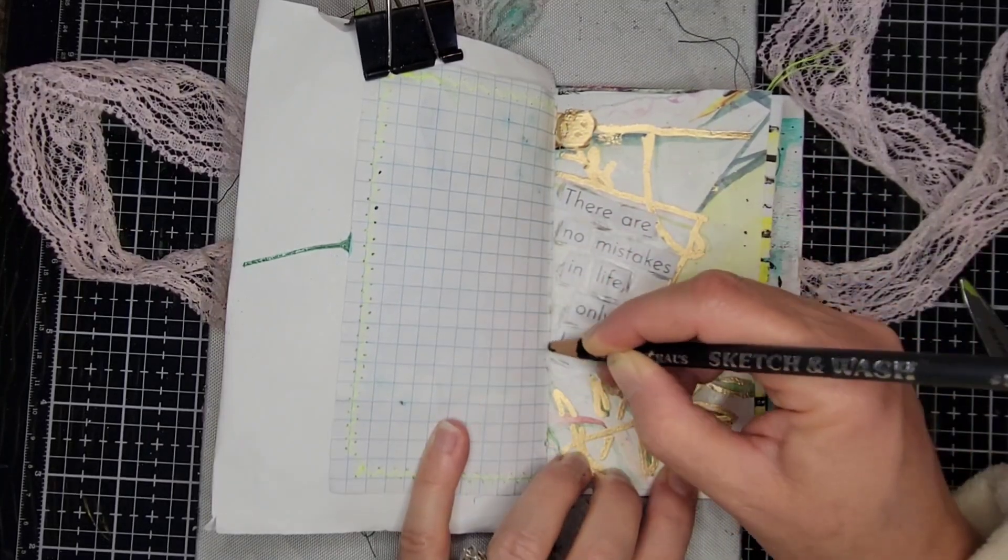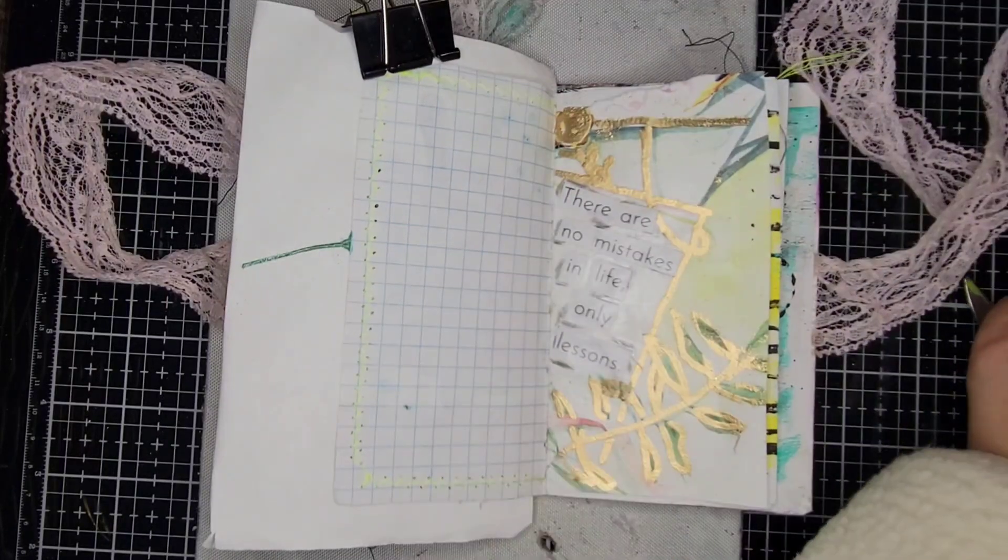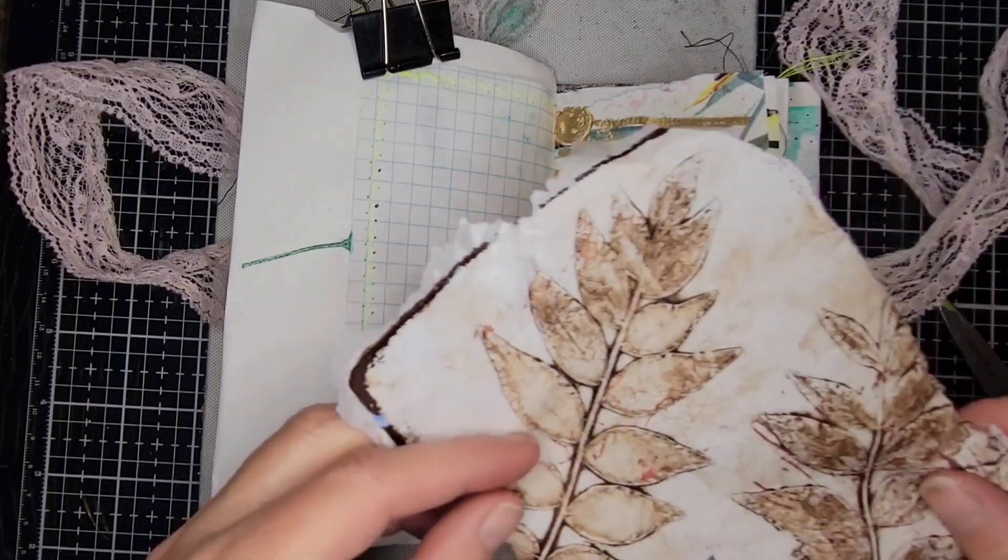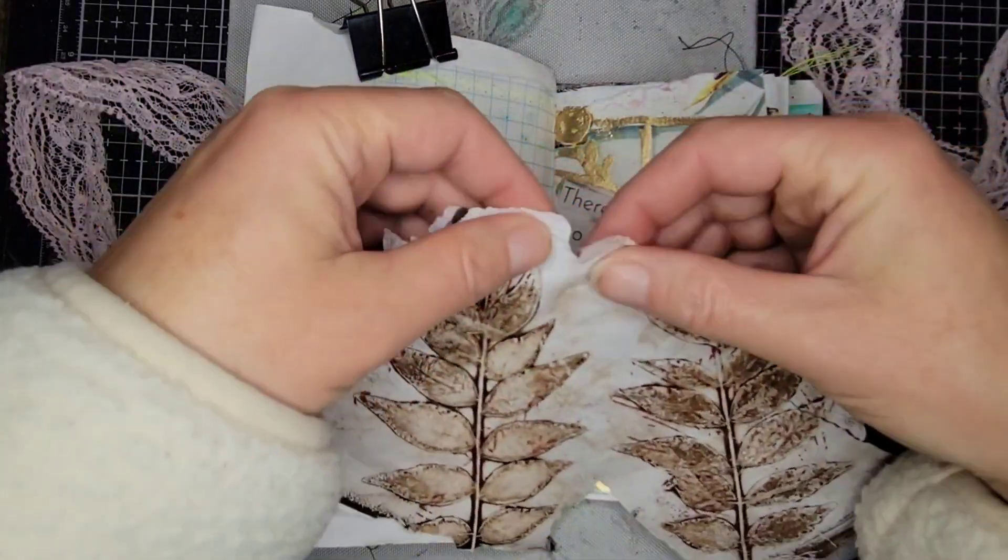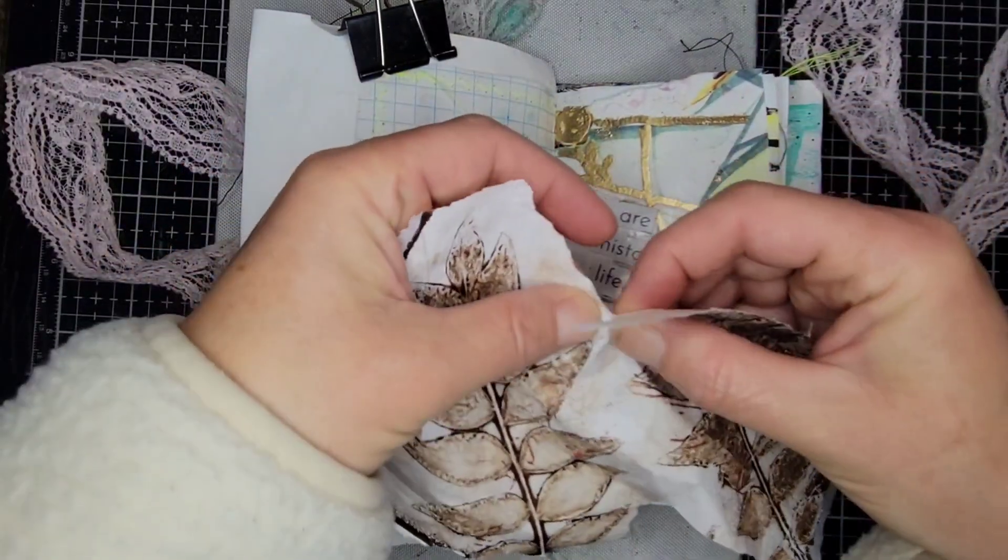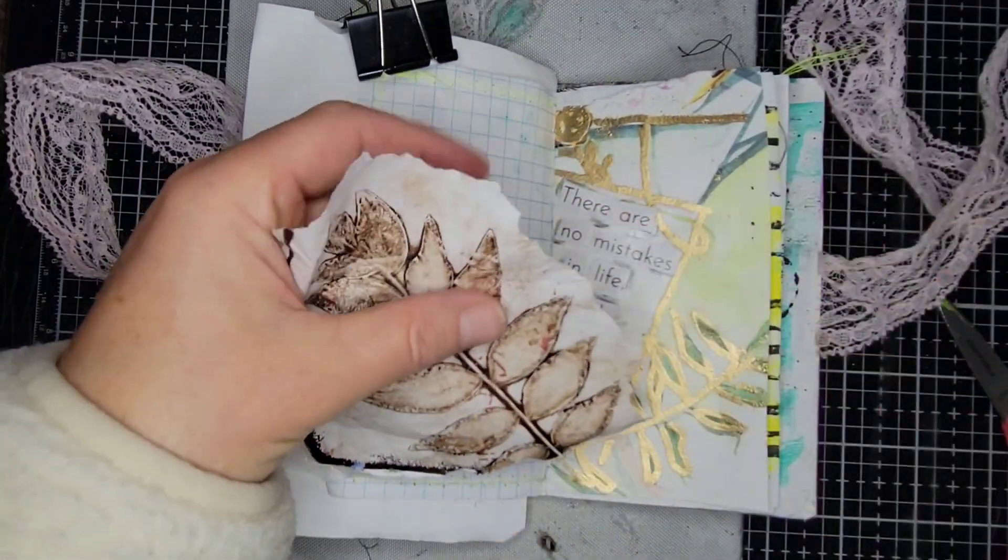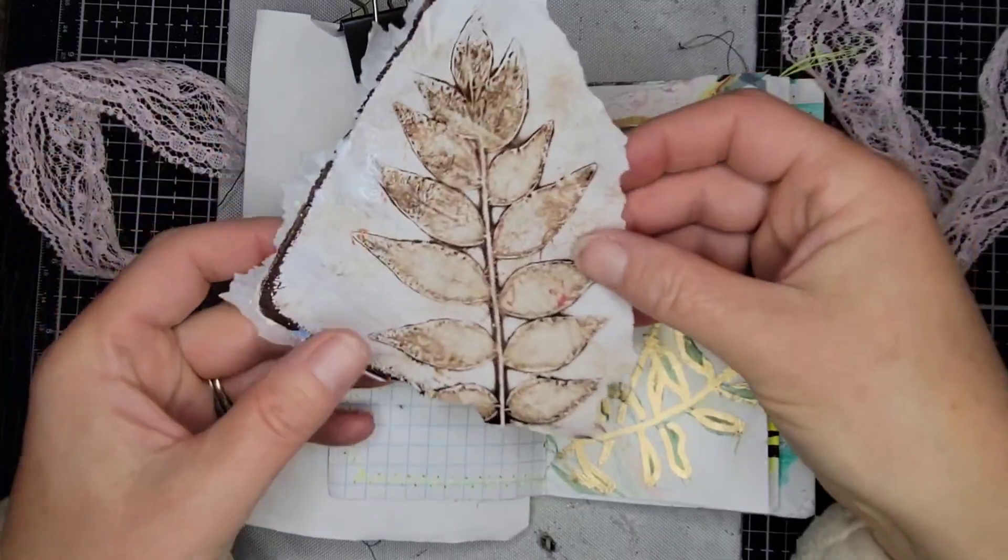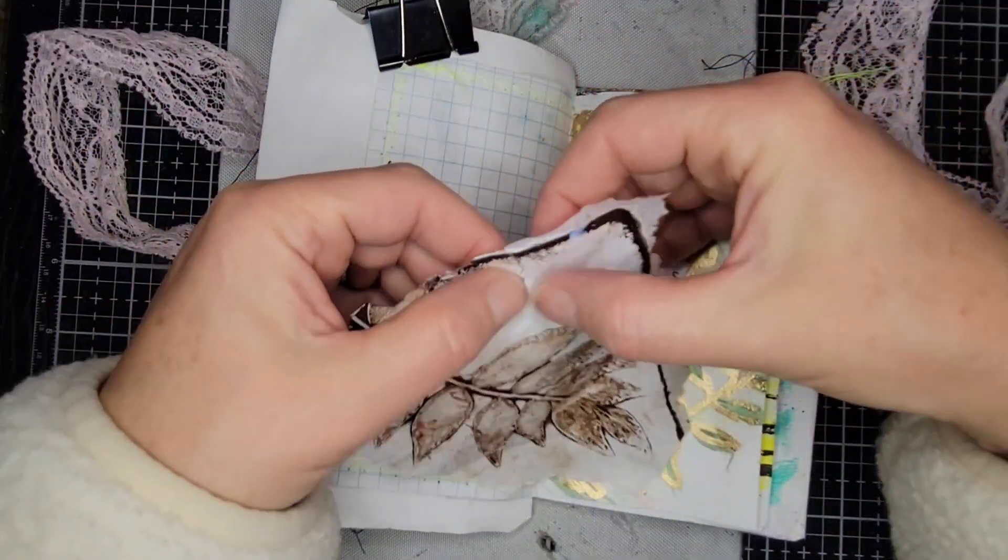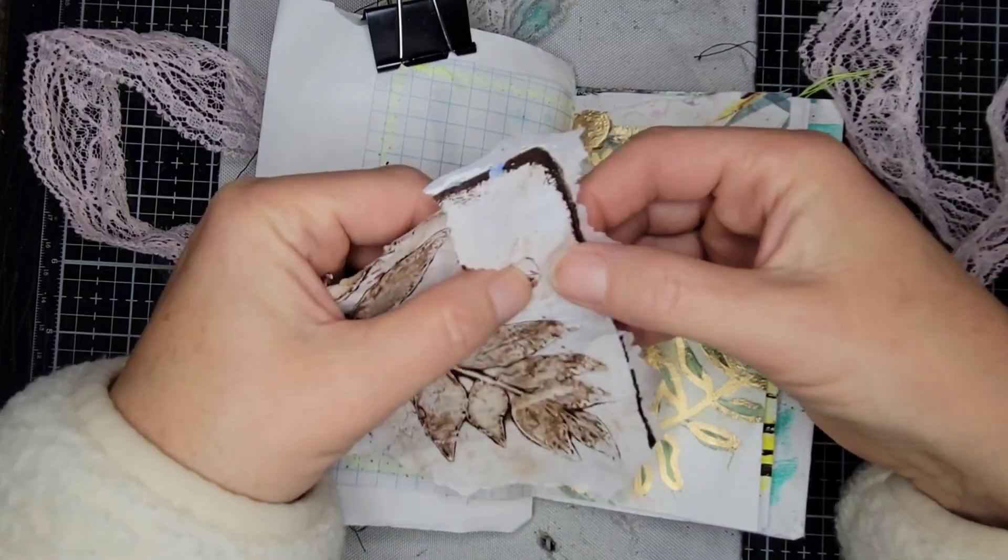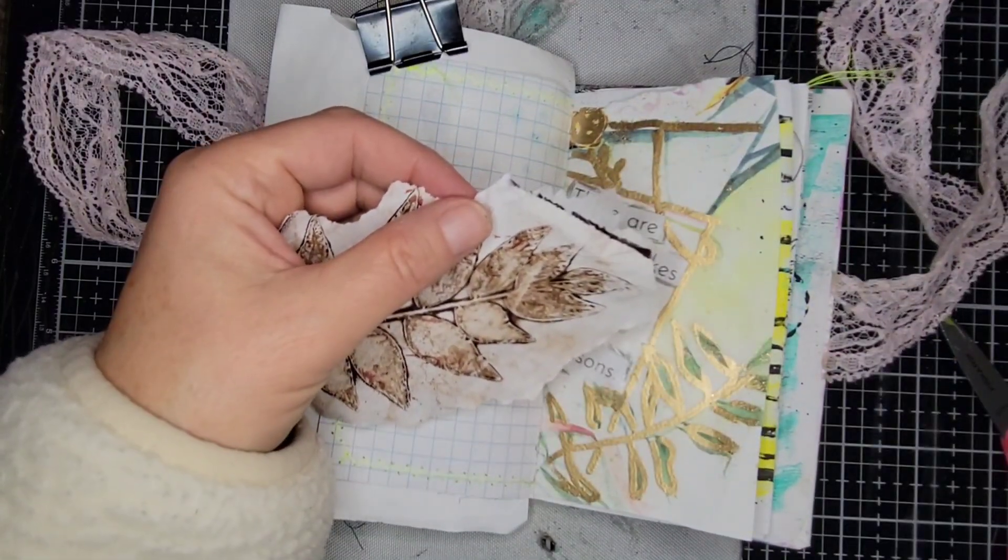And so I ended up, you'll see in a minute, I'm putting it on that left side of the page. But before I did that I just came in and I like to highlight the words with just a little black, I think this is a charcoal pencil, that just came around the words on the right side of the page. So this jelly print I did on tissue paper.